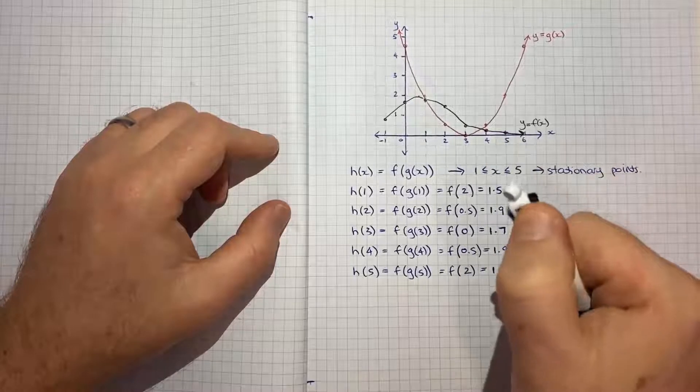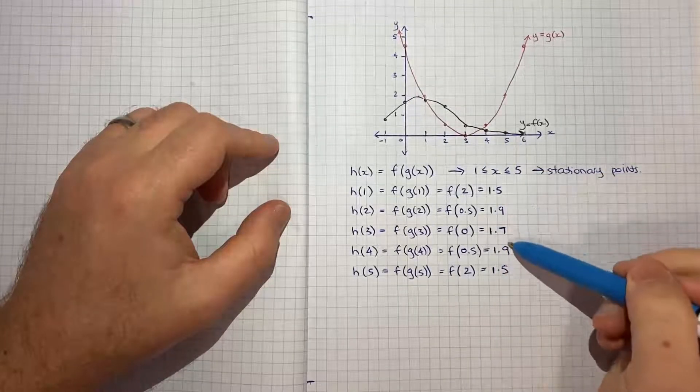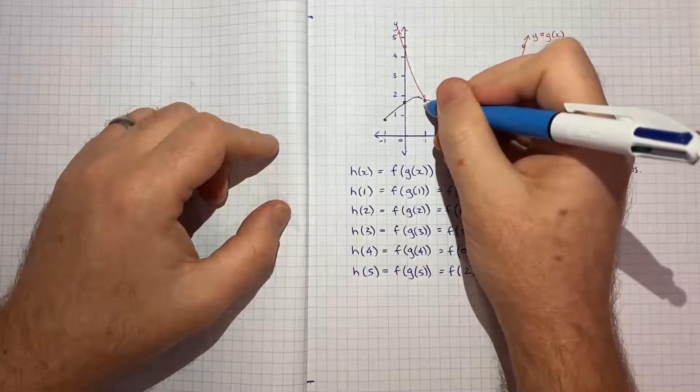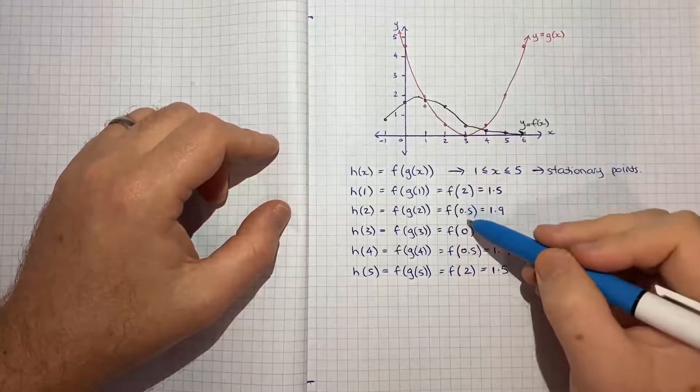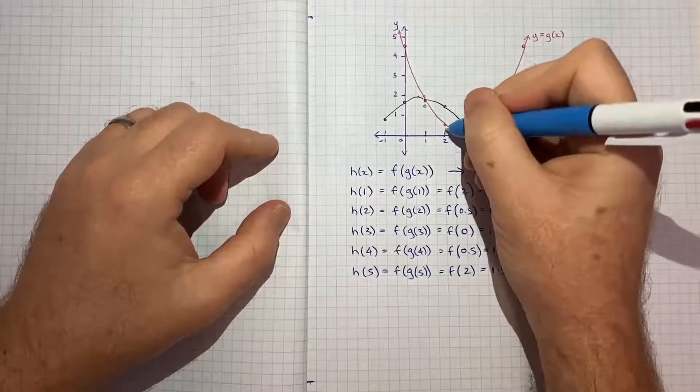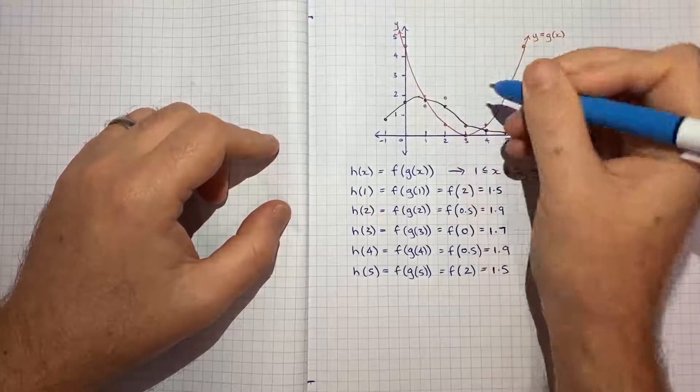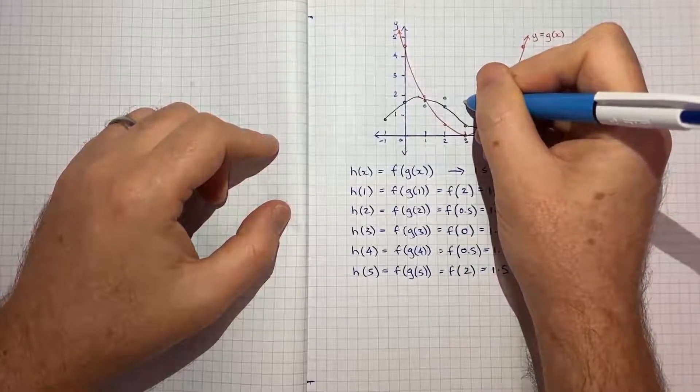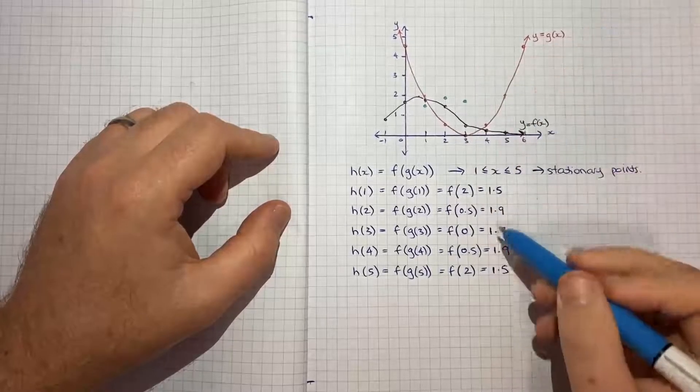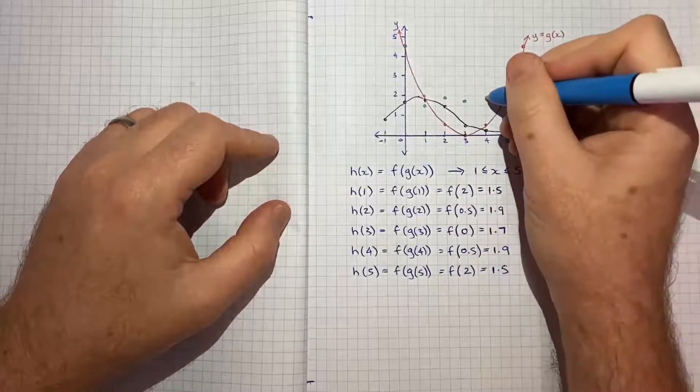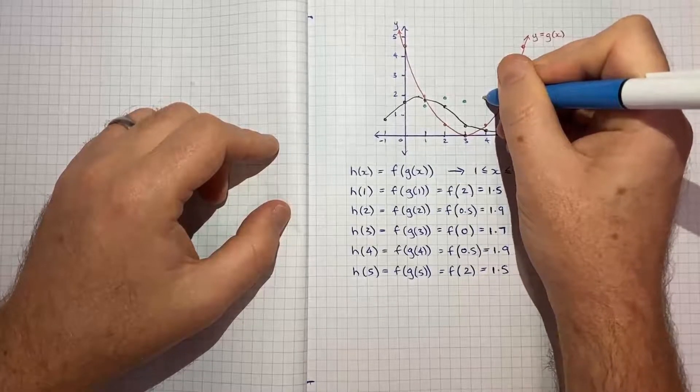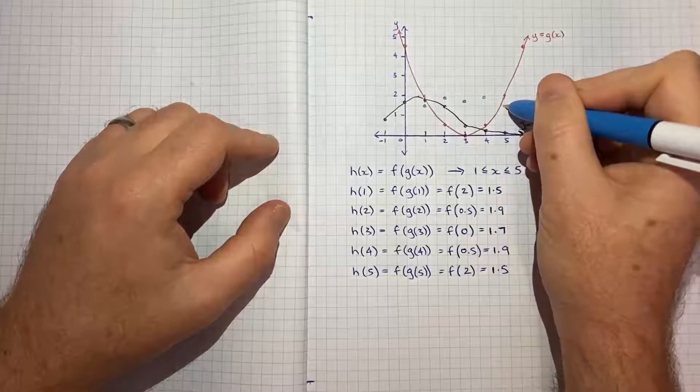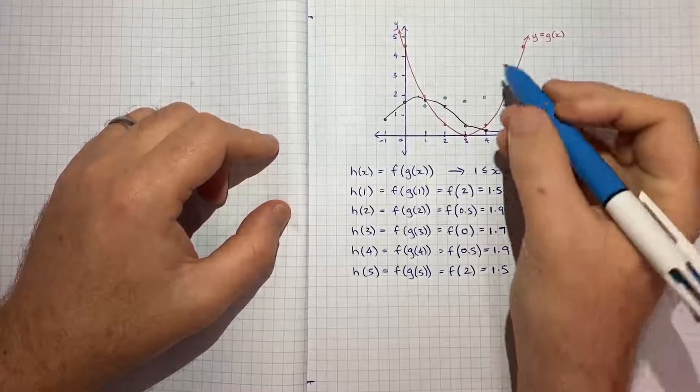So now maybe in a new color, in green, I'll plot each of these points. So at 1, I'll plot 1.5. At 2, I'll plot 1.9. At 3, I'll plot 1.7, so just kind of between 1.5 and 1.9. At 4, I'll plot 1.9 again. And at 5, I'll come back to 1.5. So if I connect those...